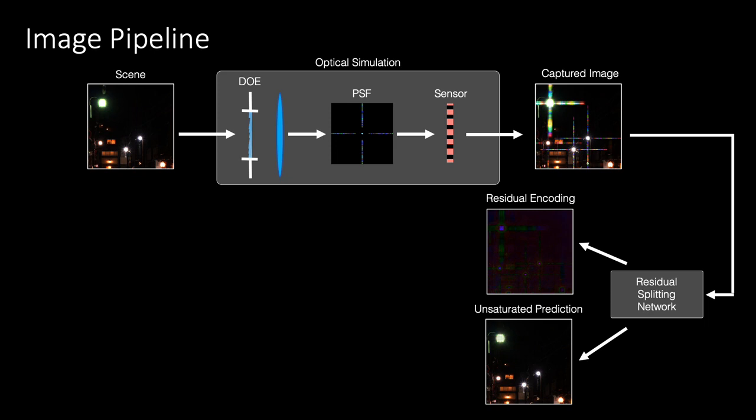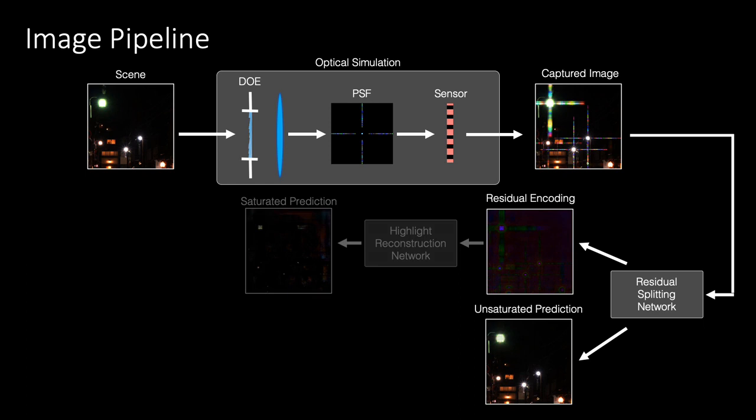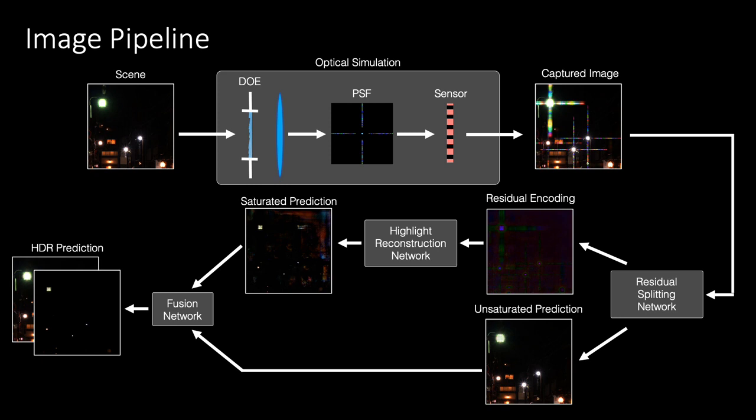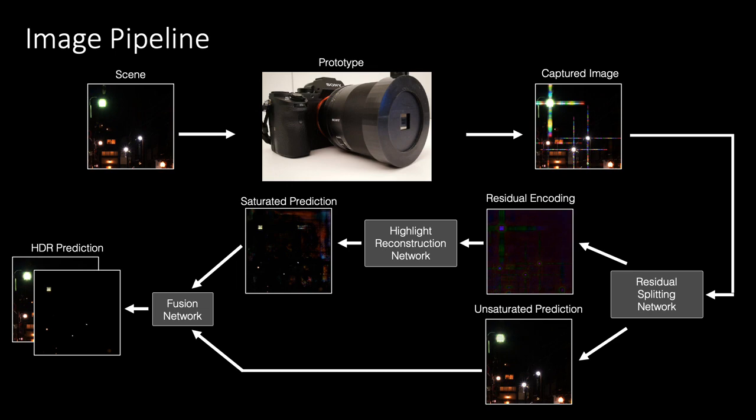The captured image is then fed into our reconstruction network. We first separate the optical encoding from the unsaturated regions using a residual splitting subnetwork. Next, a highlight reconstruction subnetwork uses the residual optical encoding to predict the saturated content. Finally, we combine the saturated and unsaturated predictions using a fusion subnetwork to produce the final HDR prediction.